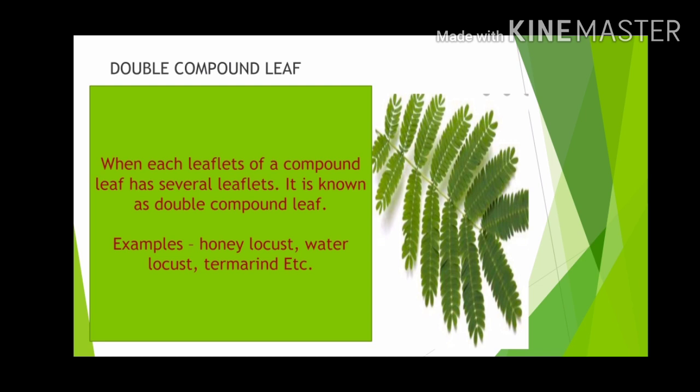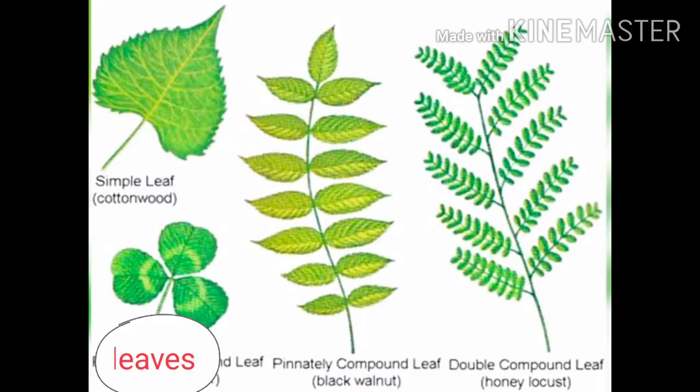Some plants like honey locust, water locust, and fern have double compound leaves.